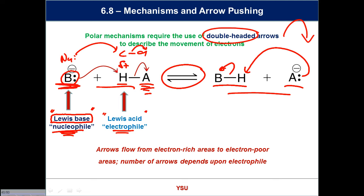What side of the road do you drive on in the United States? The right. In certain parts of the world we drive on the left. If you're not sure which side to drive on, you shouldn't be driving. Arrows in chemistry are very much like driving — they start in a certain place and go to a certain place, not the other way around. If your arrows go in the wrong direction, it's like driving on the wrong side of the road. Learn this now and do it properly to avoid a car crash. Arrows flow from electron-rich areas — from the nucleophile to the electrophile, from the base to the proton — consistently every time.